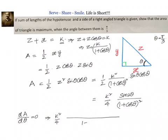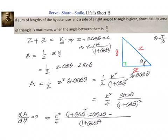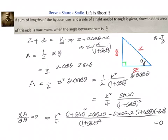We apply the u/v (quotient rule) formula. The denominator v² is (1 + cosθ)⁴. In the numerator we have v·u' = (1 + cosθ)²·(2cos2θ) minus u·v' = sin2θ · 2·(1 + cosθ)·(−sinθ). This whole expression is set equal to 0, so we focus on the numerator.